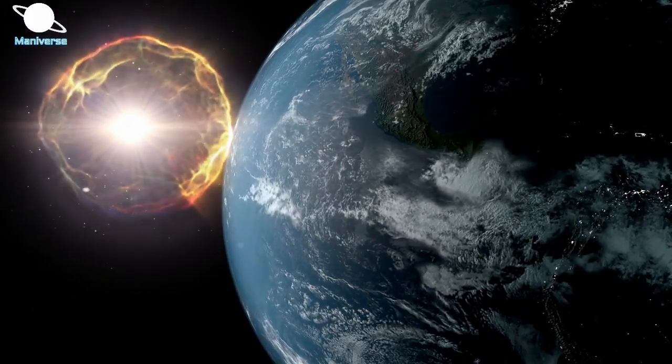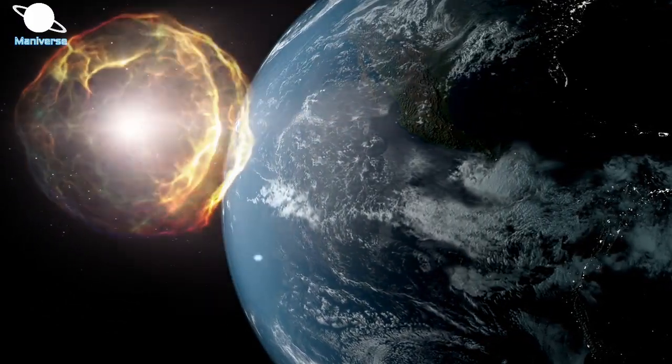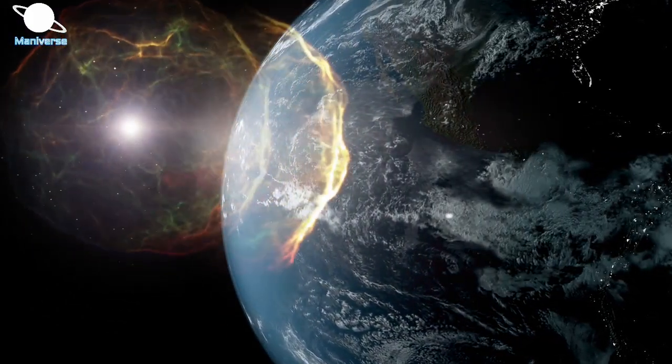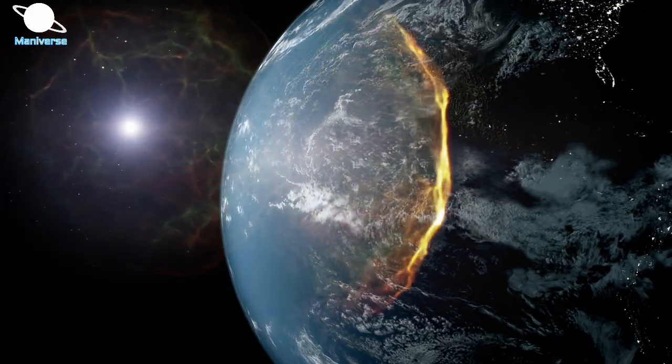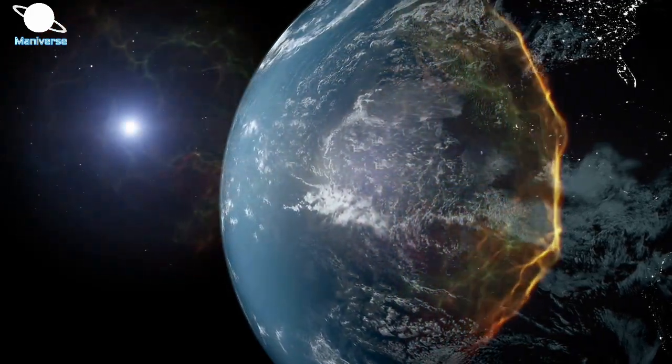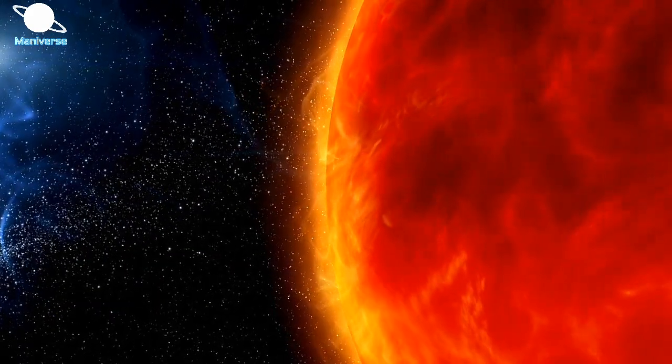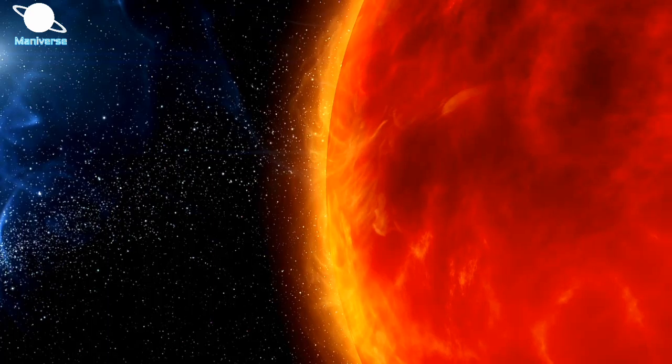This means if a nearby star does go supernova under 50 light-years, then it will be dangerous for Earth. It can damage the ozone layer of our planet. But if we talk about Betelgeuse, then relax. It is far beyond to cause any damage.